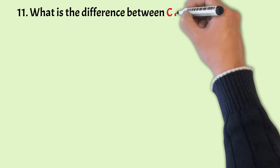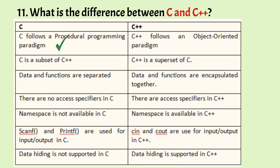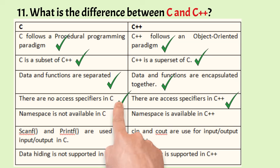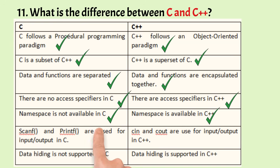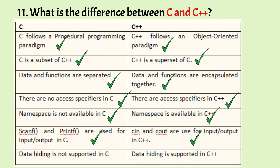What is the difference between C and C++? C follows a procedural programming paradigm, whereas C++ follows an object oriented paradigm. C is a subset of C++, whereas C++ is a superset of C. In C, data and functions are separated, whereas in C++ data and functions are encapsulated together. There are no access specifiers in C, whereas there are access specifiers in C++. Namespace is not available in C but is available in C++. In C, scanf and printf are used for input and output, whereas in C++, cin and cout are introduced for input and output. Data hiding is not supported in C, whereas data hiding is supported in C++.